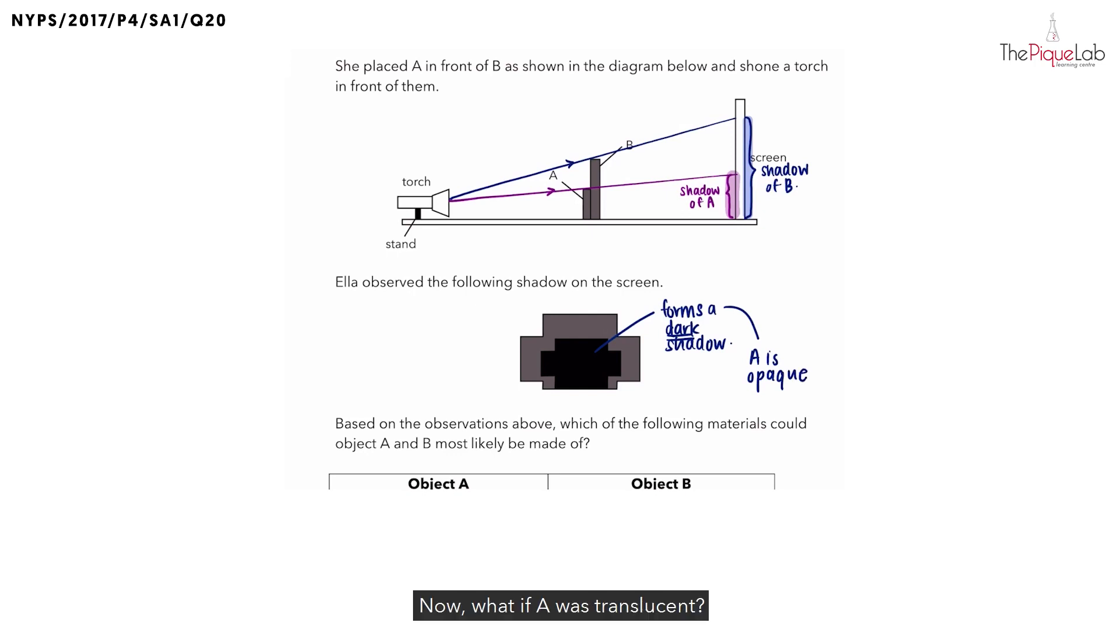Now, what if A was translucent? What kind of shadow should we see instead? If A was translucent, it means that only some light is blocked. That means it will form not a dark but a faint shadow.